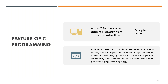Features of C. Many C features were adapted directly from hardware instructions — for example, the ++ and -- operators. Although C++ and Java have replaced C in many areas, it is still important as a language for writing operating systems, systems with memory or power limitations, and systems that value small code size and efficiency over other factors.